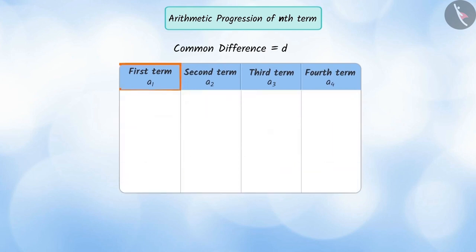Let us assume that A1, first term, A2, second term, A3, third term, A4, fourth term, of one AP, whose common difference is D. Here, first term, A1 can be written as A plus 1 minus 1 multiplied by D.